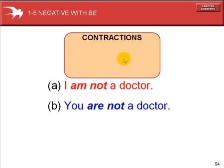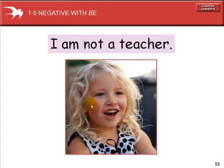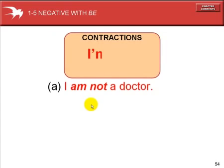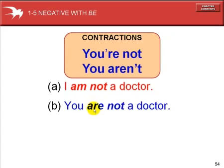You are not a doctor. You're not a doctor. You aren't a doctor. These have the same meaning. You have two options for using a contraction: you are not and you aren't. Both of these sentences have the same meaning.